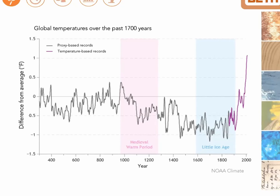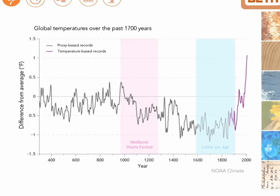the climate has not been stable. Rather, the Earth has undergone a few oscillations, including the medieval warm period, which was a time of anomalously warm temperatures in the North Atlantic region between 950 and 1250 AD. A couple centuries later, this was followed by a Little Ice Age around 1650, which extended to around 1850.